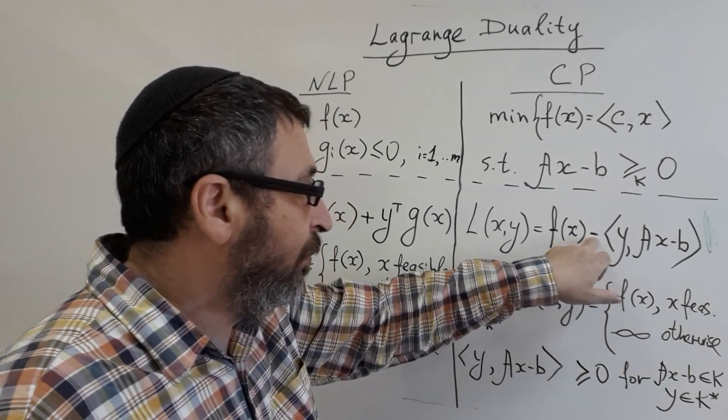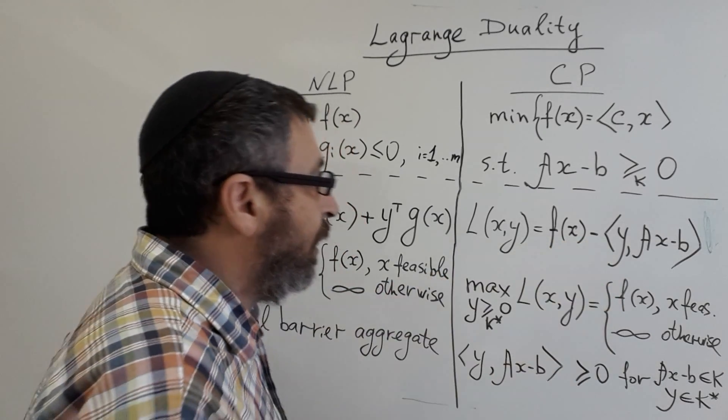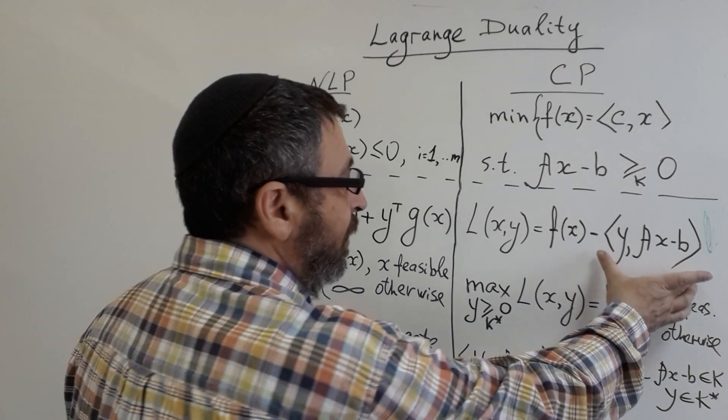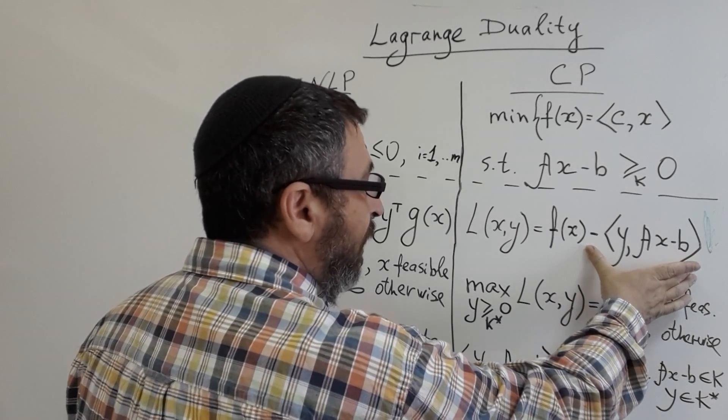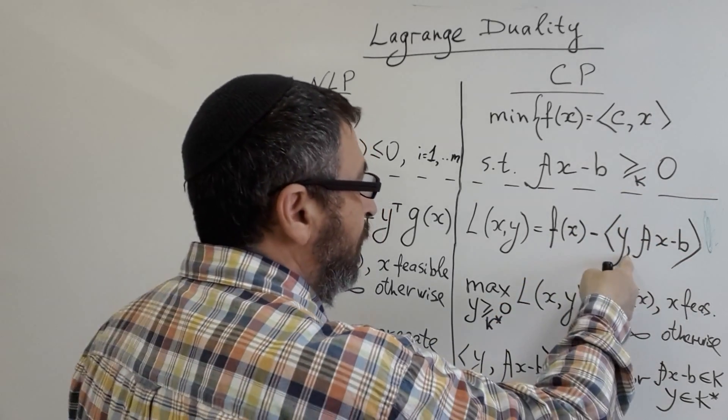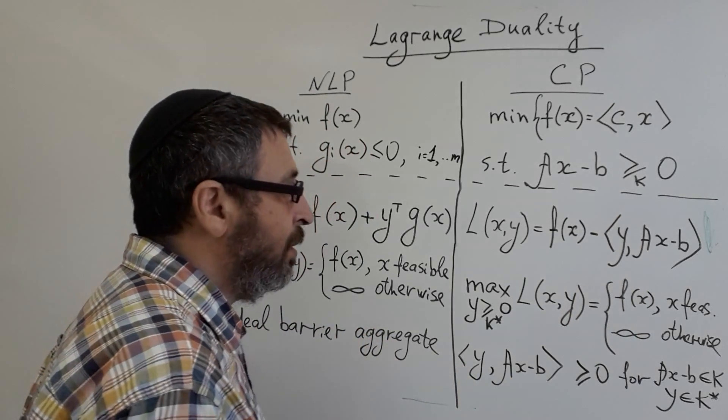So this expression is greater or equal to zero, and we subtract it. We have minus here. This says that this with minus is negative and maximal value can be achieved, for example when Y is zero. So the maximum will be F.